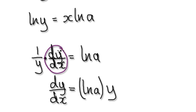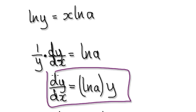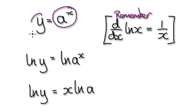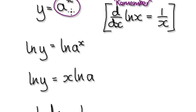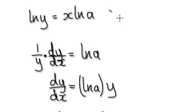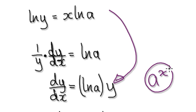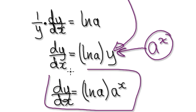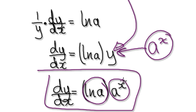Now your aim is to get dy/dx on its own. Multiply both sides by y to cancel the 1/y, giving dy/dx equals y times ln(a). And remember that y equals a to the power of x, so you can substitute that in. Therefore dy/dx equals ln(a) times a to the power of x.